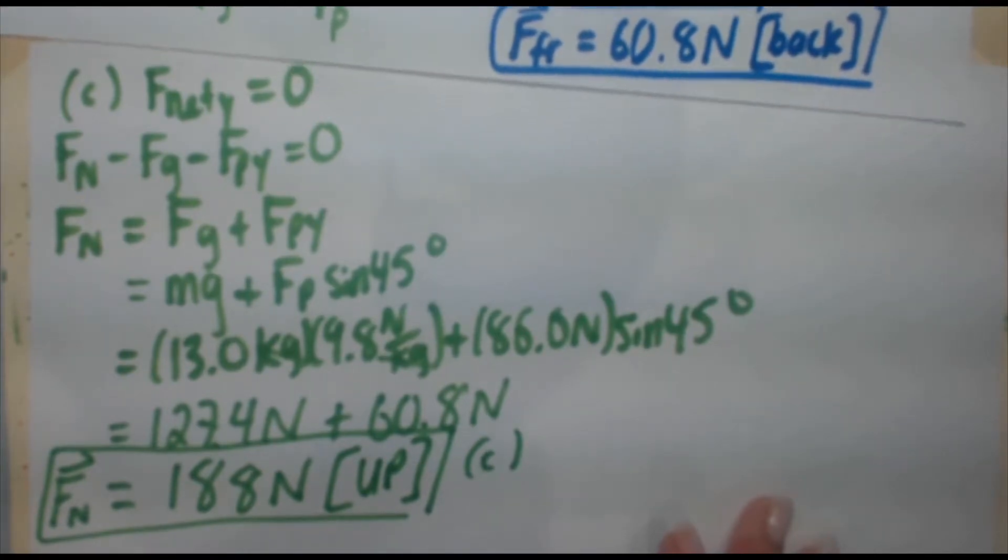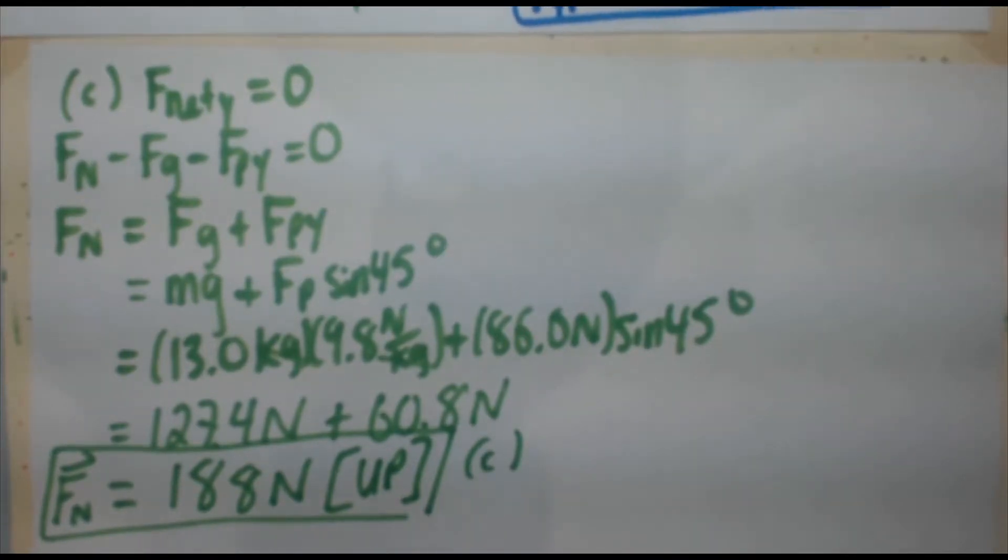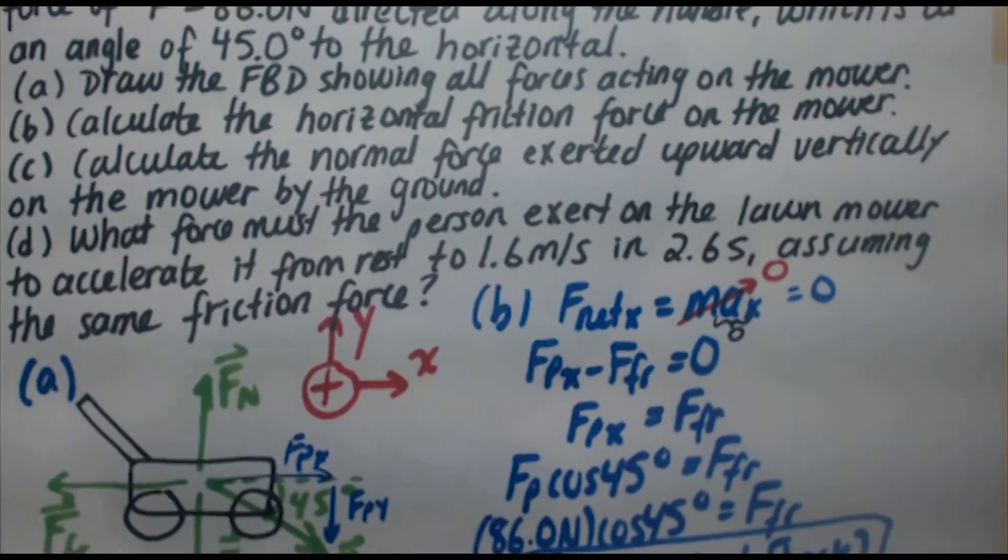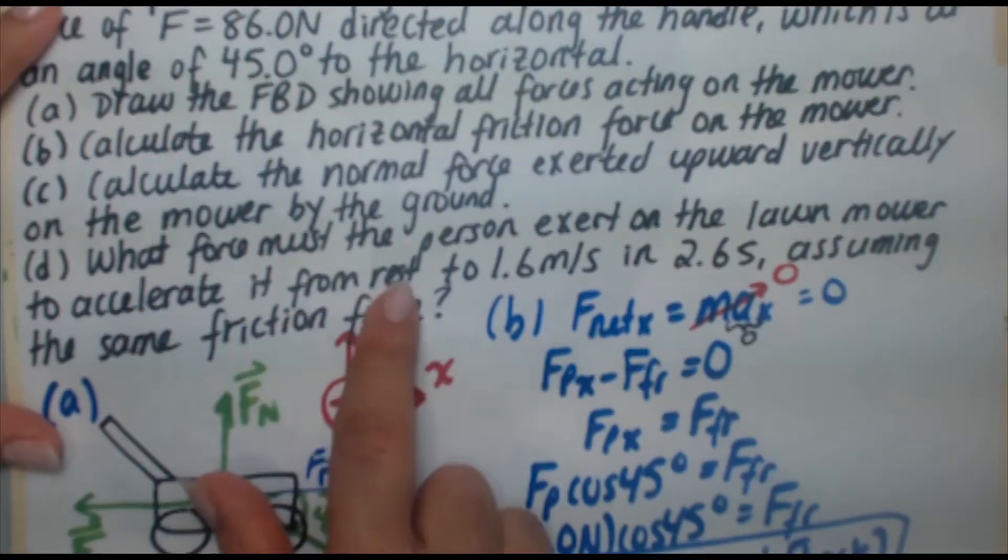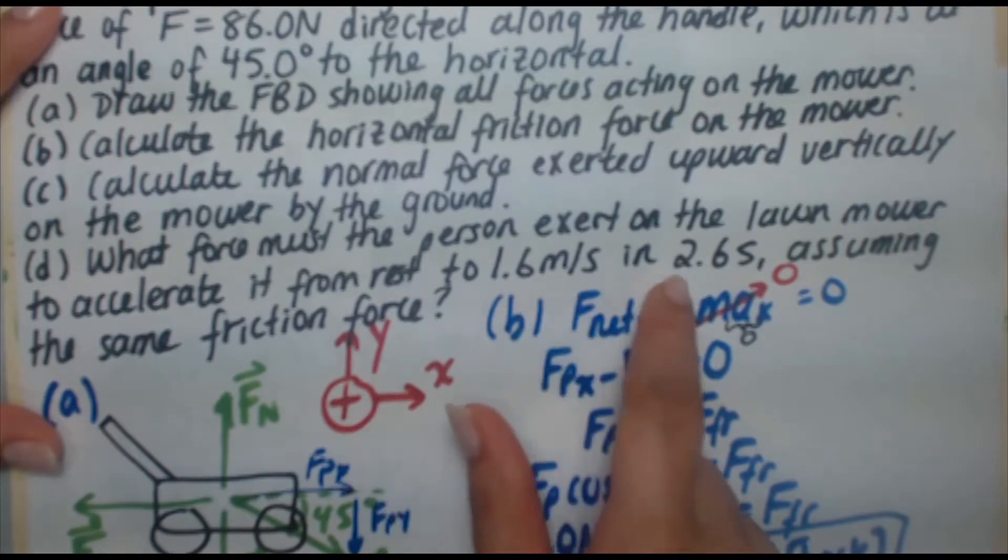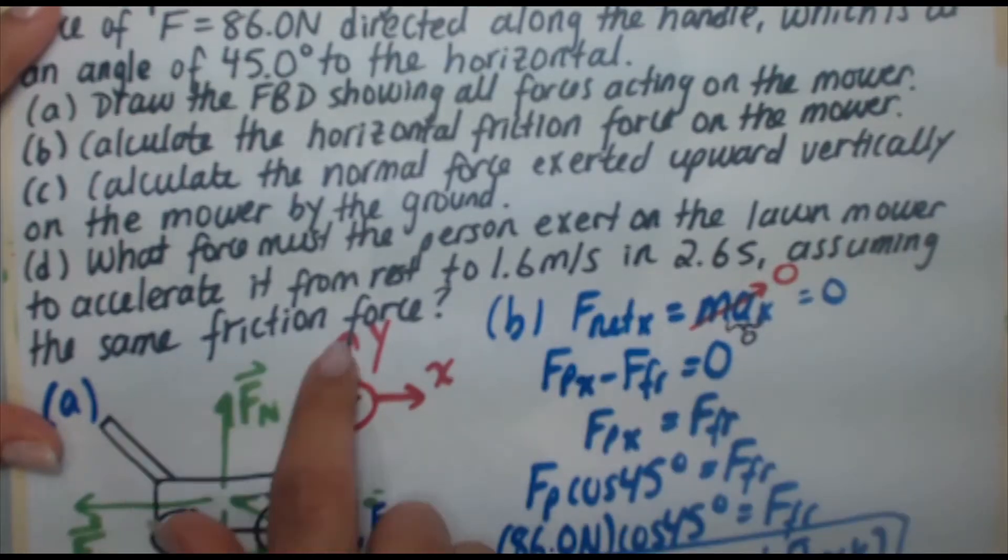See how fast that went? We're almost done here. We have one more part to go. Okay, last part D. Part D says, what force must the person exert on the lawnmower to accelerate it from rest to 1.6 meters per second in 2.6 seconds, assuming the same friction force?